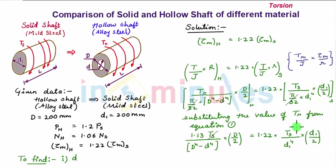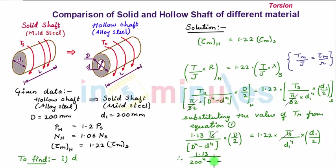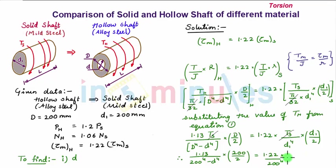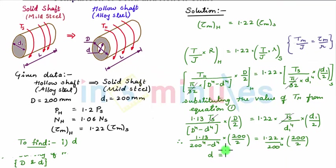T_S cancels on both sides. Substituting D = 200 mm and D1 = 200 mm: 1.13 / [(200⁴ − d⁴) × (200/2)] = 1.22 / [200⁴ × (200/2)]. Solving this equation gives d = 104.23 mm.